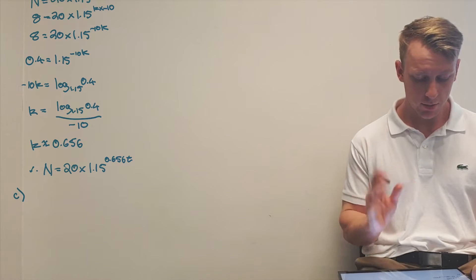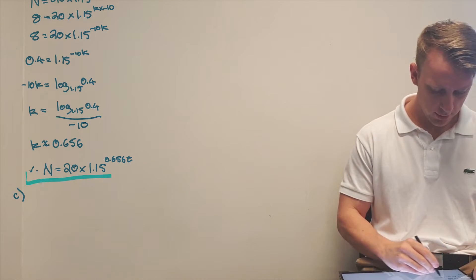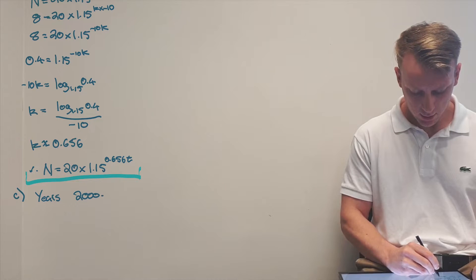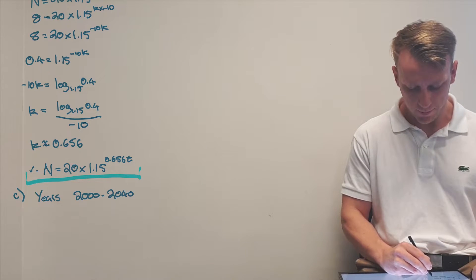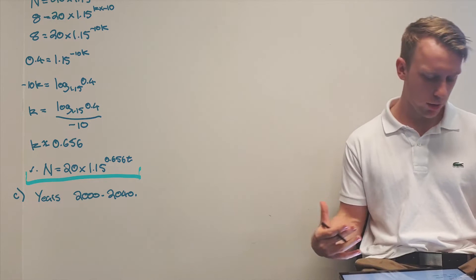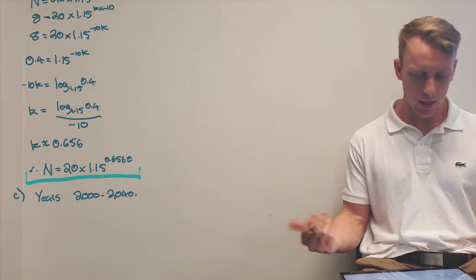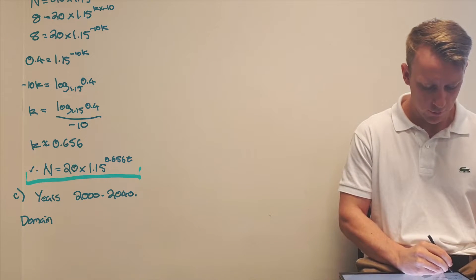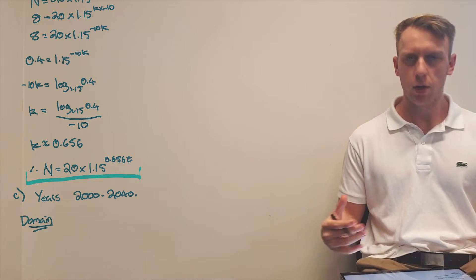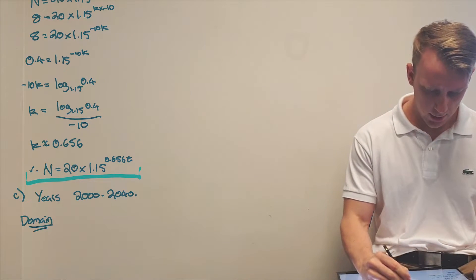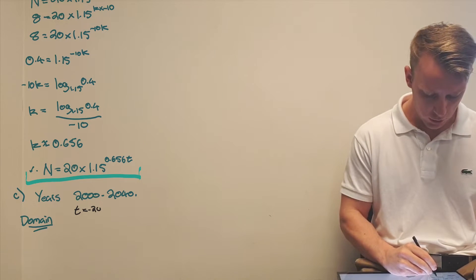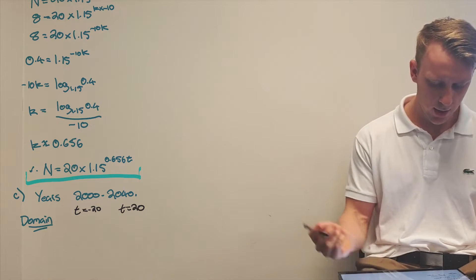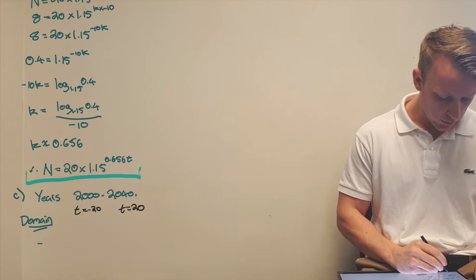Part three: sketch the model for the years 2000 to 2040. We first express the years in terms of t to define the domain. The year 2000 corresponds to t equals negative 20, and 2040 corresponds to t equals 20, so the domain is negative 20 to 20.